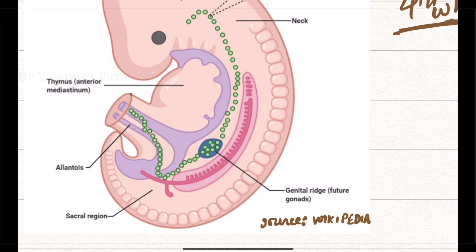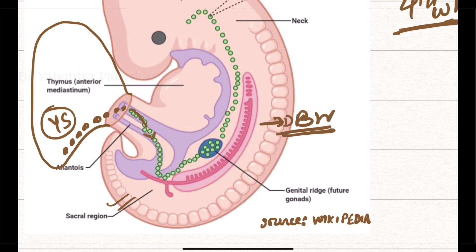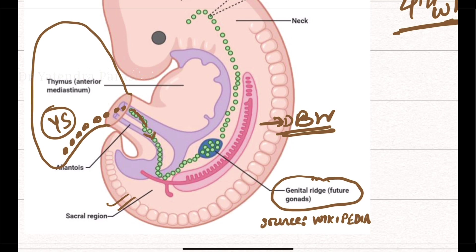You can see in this diagram the developing embryo and the yolk sac. From the yolk sac, these primordial germ cells start to migrate towards the dorsal body wall. When they reach the dorsal body wall, they form the genital ridge by stimulating the somatic epithelium and forming the somatic support cells.